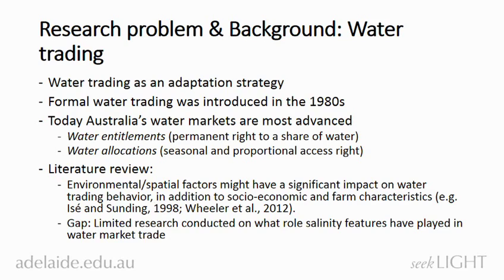Formal water trading was introduced in the 1980s in Australia and today Australia's water market belongs to the most advanced in the world. There are two major water products that are traded in Australia. The first one is water entitlements, which are water access licenses that provide a permanent access to a share of water, and the other one is water allocations, which are seasonal and proportional access to a water access license.